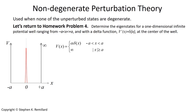An infinite potential well is easiest to solve when one of the edges of the well is zero — that way all of the eigenstates are sine waves. But in problem 4, I put the zero of x at the center of the well, and bound it at plus and minus a, and then asked what happens when there's a delta function potential placed right at the center of the well.